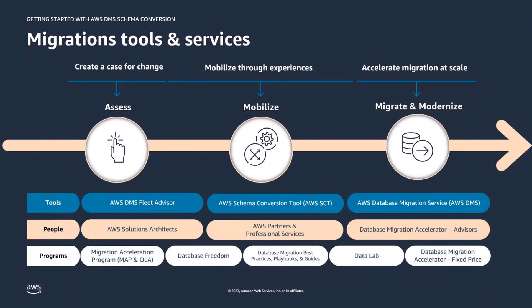In the assessment phase of migration, DMS provides Fleet Advisor, geared towards customers looking to move a fleet of databases to the cloud. This tool inventories and analyzes your data to quickly create a migration plan. In the mobilized phase, AWS provides the Schema Conversion Tool, or SCT, which assesses schema compatibility of source databases and attempts to convert all schema and code objects. In the migrate and modernize phase, DMS migrates the data with features like pre-migration assessments and data validation to help ensure the migration is completed properly.